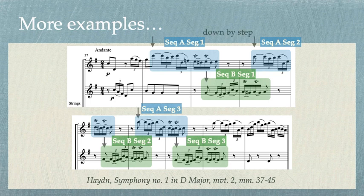Notice how in the upper voice the melody continues on as if it's going to add another segment to the sequence at the end, but is actually truncated. We call this a failed sequence, or an aborted sequence. These are worth labeling for reference and completion of your analysis. Let's listen once more with this analysis in mind.